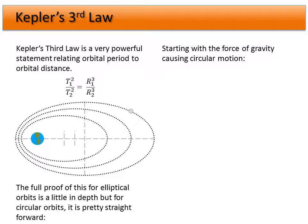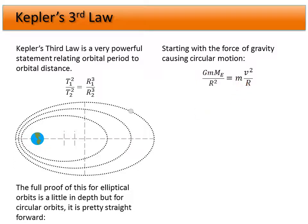We start with the force of gravity causing circular motion — this is a bring-everything-together derivation. We have GMm over r squared. Dropping the minus sign and working with magnitudes, the gravitational force between two objects causes the circular orbit. So the net gravitational force equals mass times centripetal acceleration: v squared over r. The moon, for example, orbits with that centripetal acceleration.